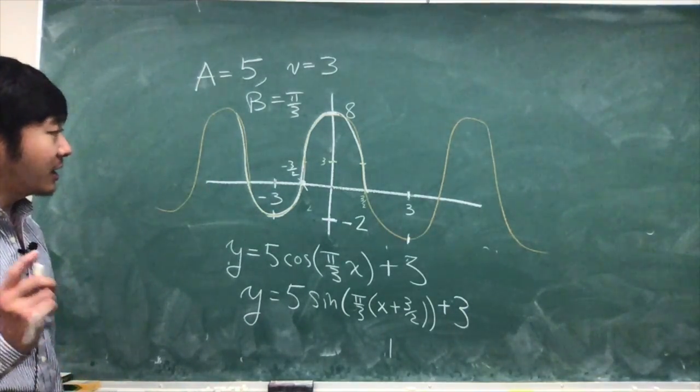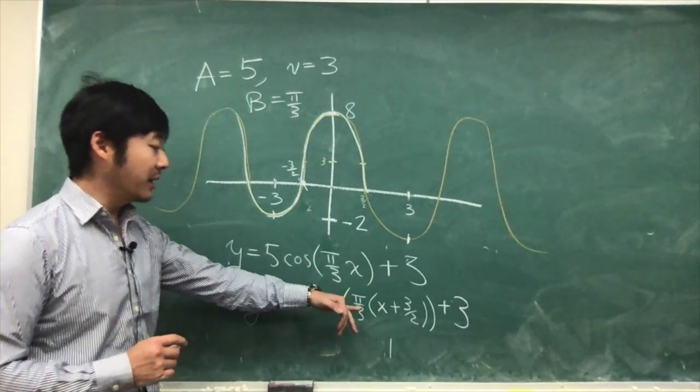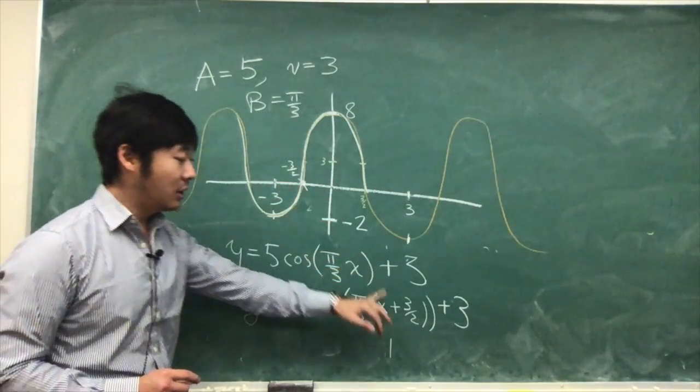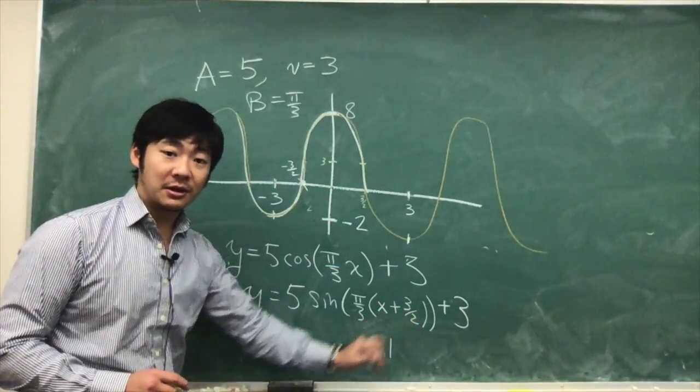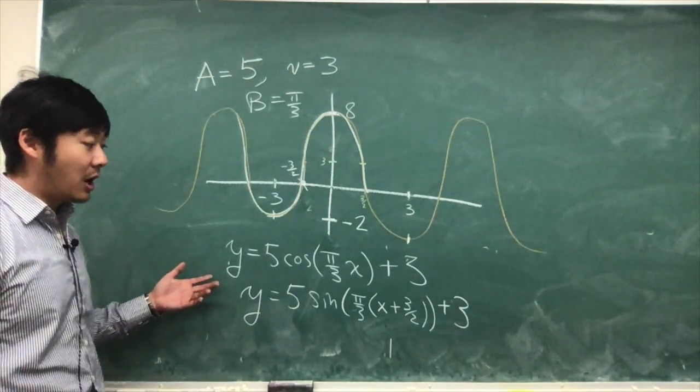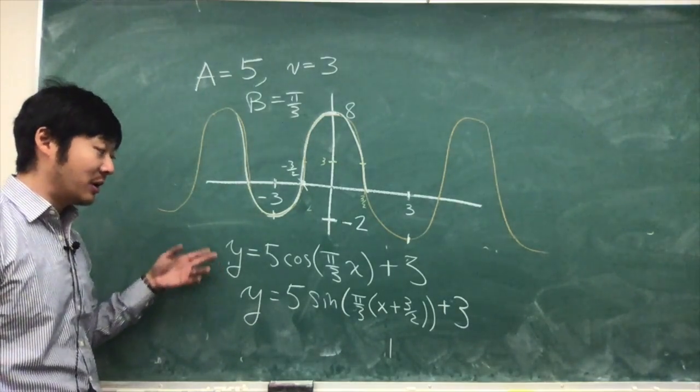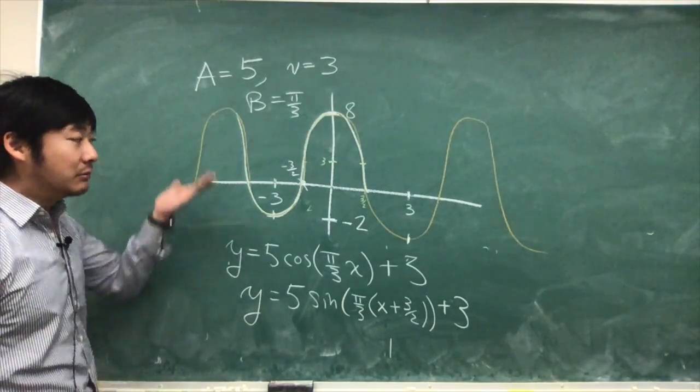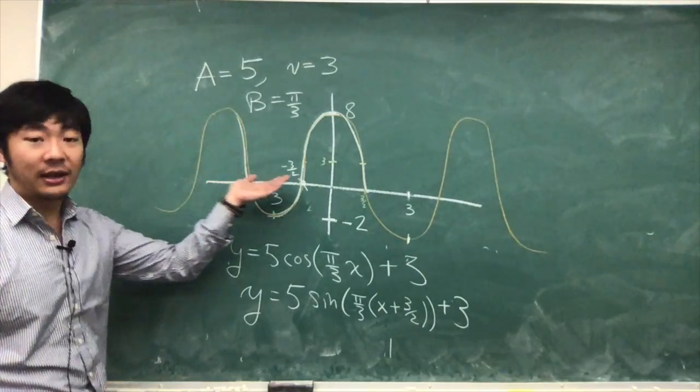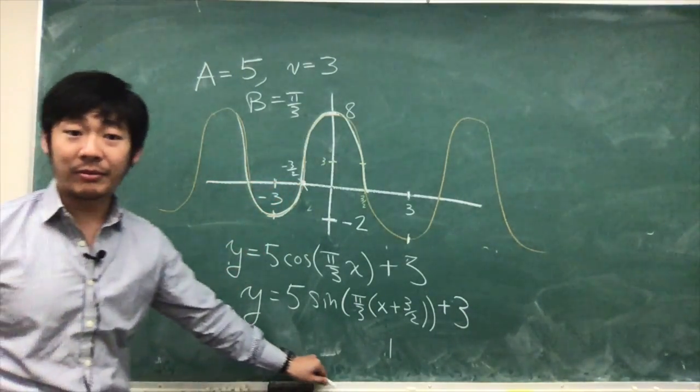One way to check is to make sure you get 0 here. If you plug in x equals negative 3 over 2, then inside it becomes 0. These are the same exact graphs. Later on, we'll have a more formulaic way to convert between them, but we can also just look at the graph and figure this out. Hopefully this helps. Please everyone, keep up the good work.